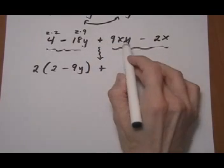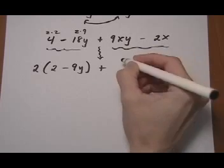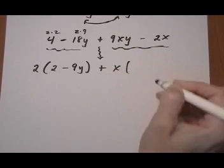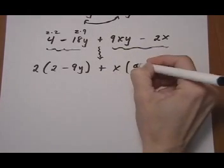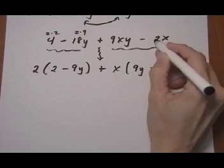And for the next ones we have x and x are the only common factor. So we pull out an x. The leftovers go in parenthesis, 9y minus 2.